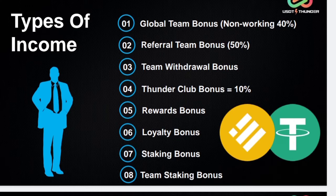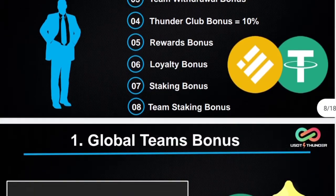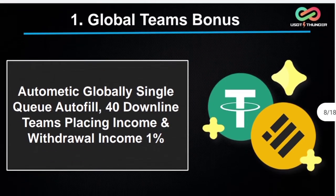Let us start one by one with the types of income details. First: global team bonus. In this income, automatic global single queue autofill — 14 downline team placing income and withdrawal income 1%. If your ID is activated from $15, the company will provide 14 members under you. From these members you can get 1% placing income from each member and 1% withdrawal income from each member — two types of income from your 14 downline team provided by the company.